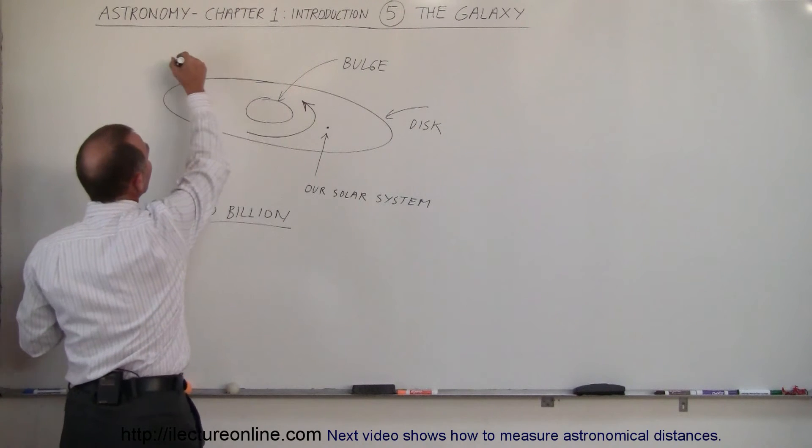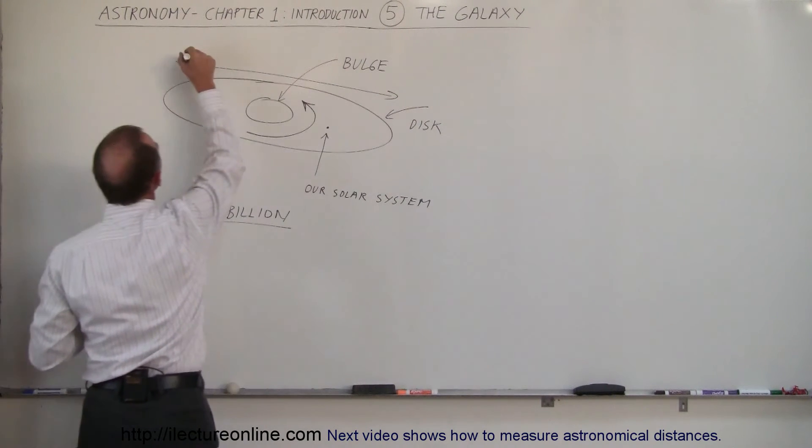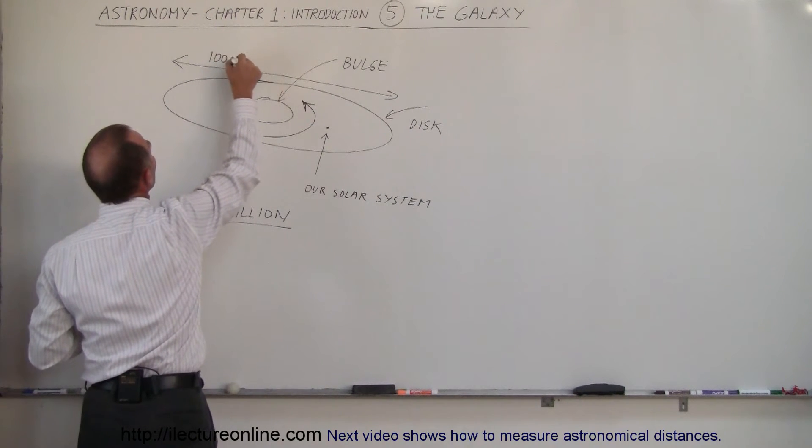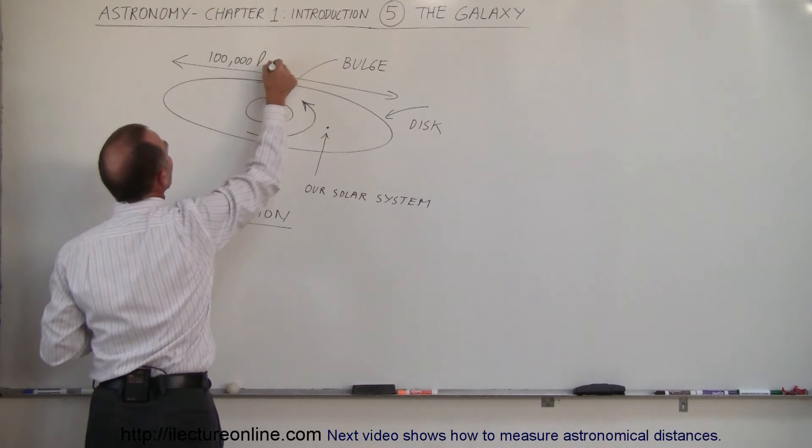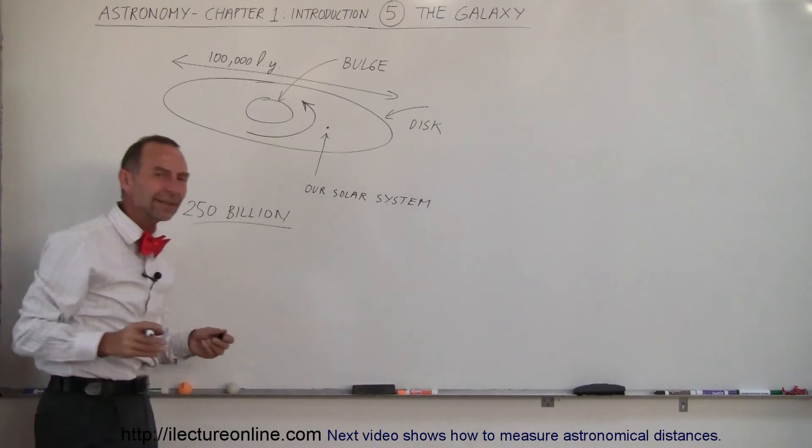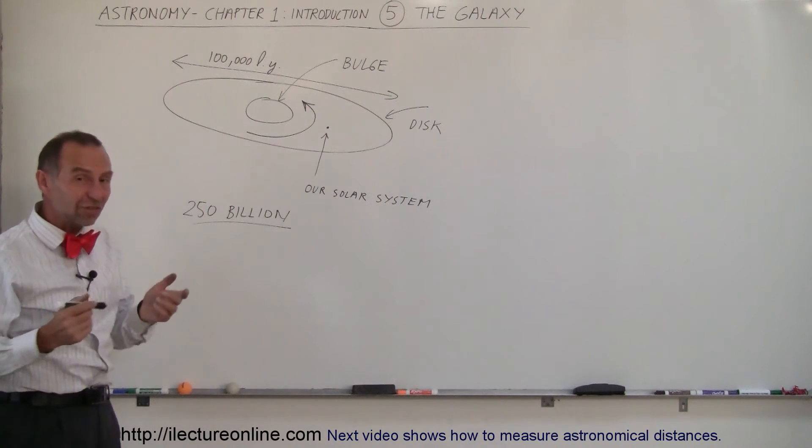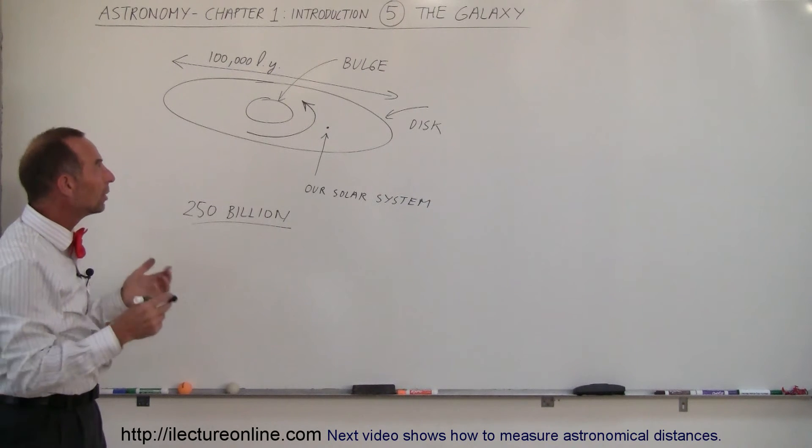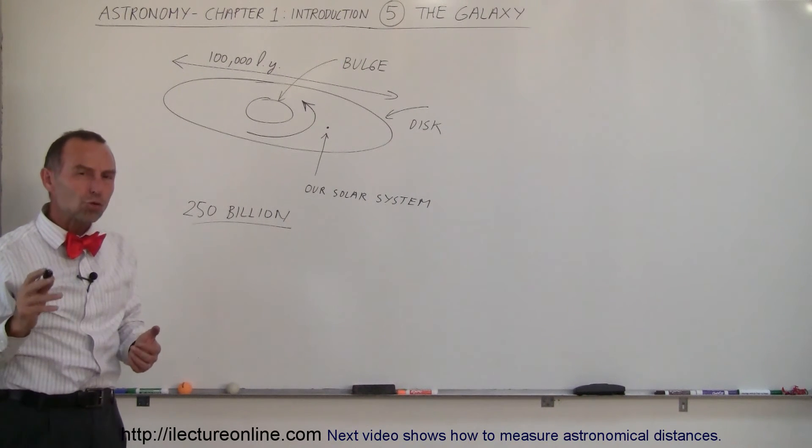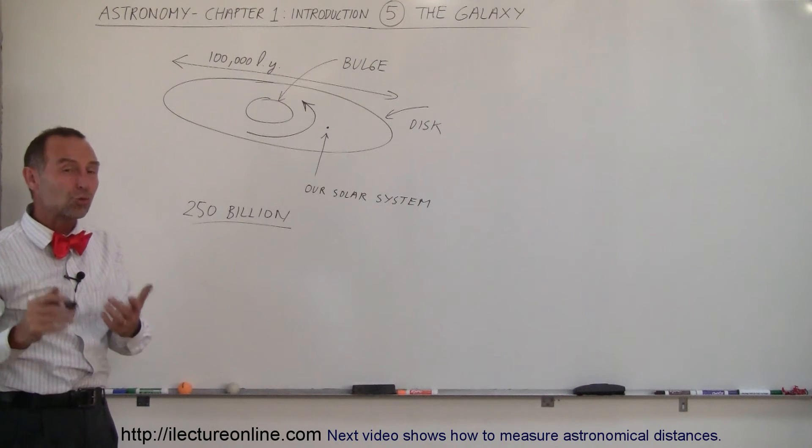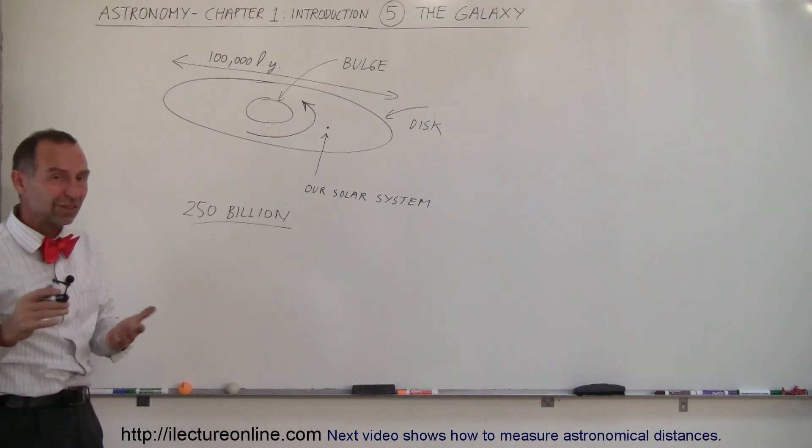It turns out our Milky Way galaxy is about a hundred thousand light years in size, a hundred thousand light years across. Well, what is a light year? Well, a light year is a distance that light travels in one year, and that is an enormous distance. It's about six trillion miles. One light year is about six trillion miles.